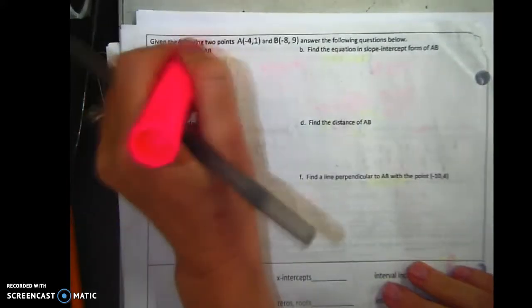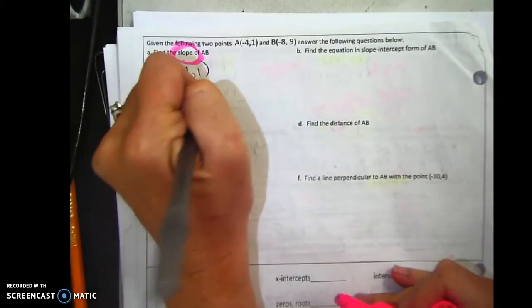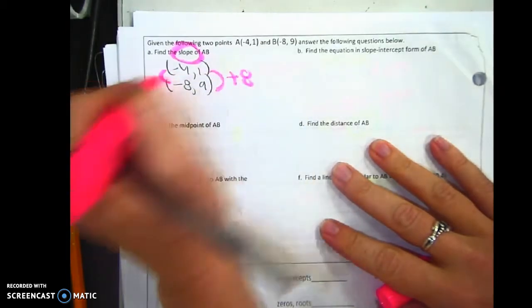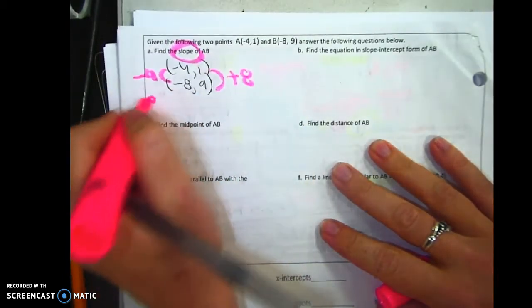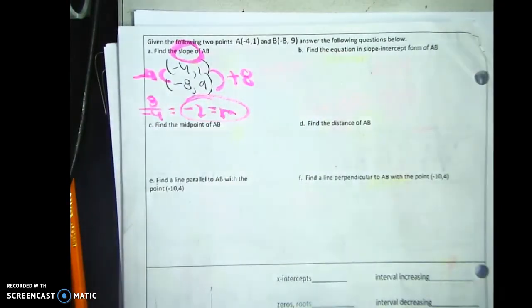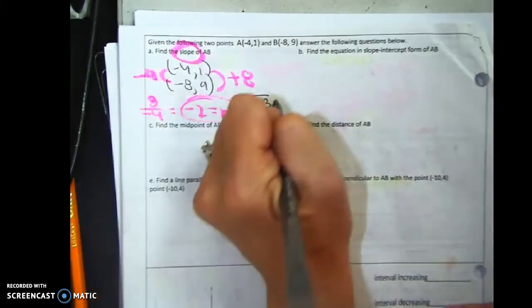So first thing they want is the slope. You can use the formula if you would like, but I would just do the pattern. It's getting bigger by 8, smaller by 4. 8 over negative 4 is negative 2. That's my slope. So the slope of AB is negative 2.